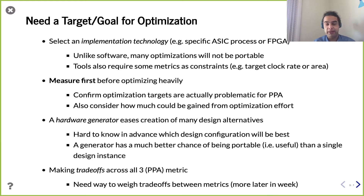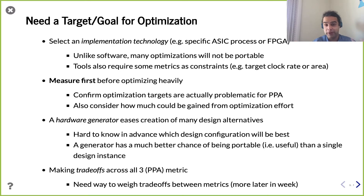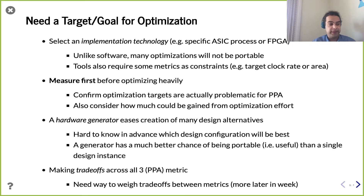The CAD tools also require you to specify your goals. In software you say 'compile it, make it fast,' but hardware tools need more constraints. You can't just say 'tell me how big it is or how fast it is' — the tool will say that's an underspecified problem. Typically you say something like: here's my hardware design, I want to shoot for this clock rate, here's a bit of area to work with — now minimize area and reduce power within those bounds.